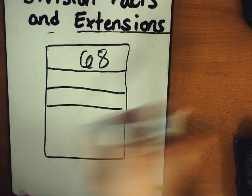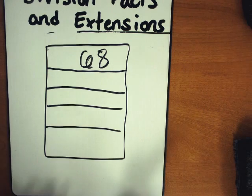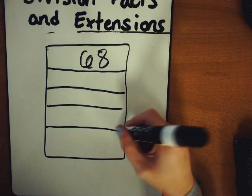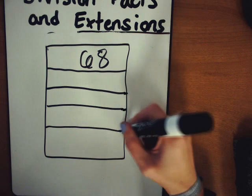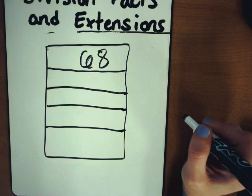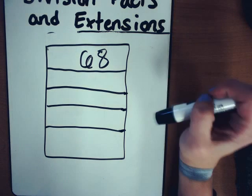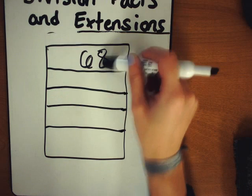So I want you to go ahead and write down the same name collection box in your notebook. And this time we're going to be concentrating on writing down numbers that are equivalent in these different boxes to 68.